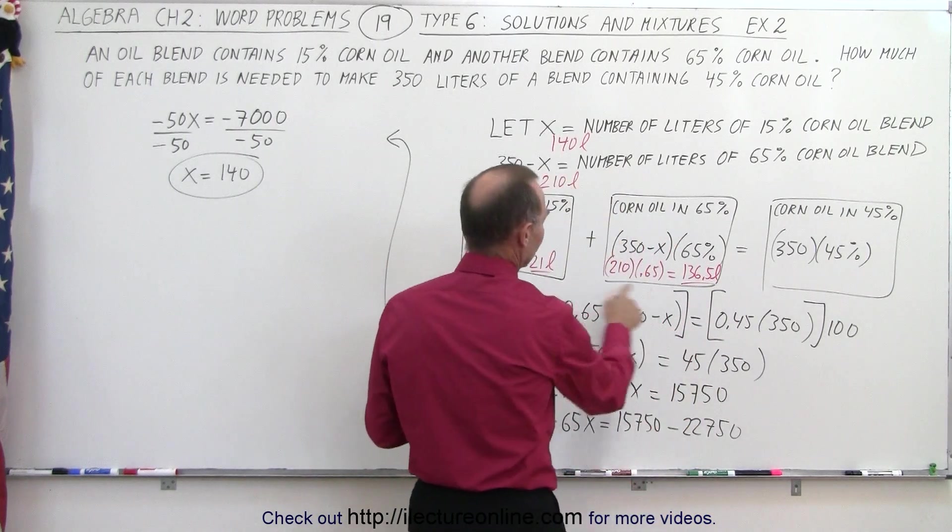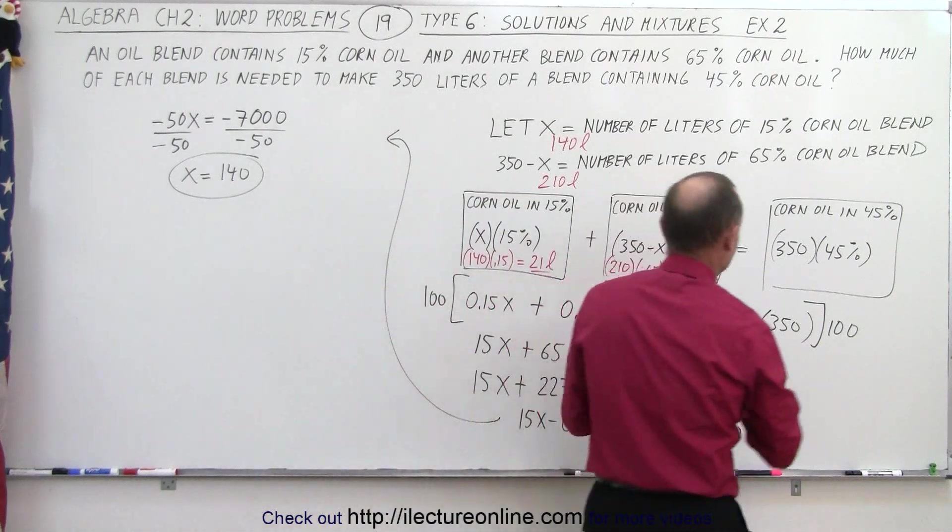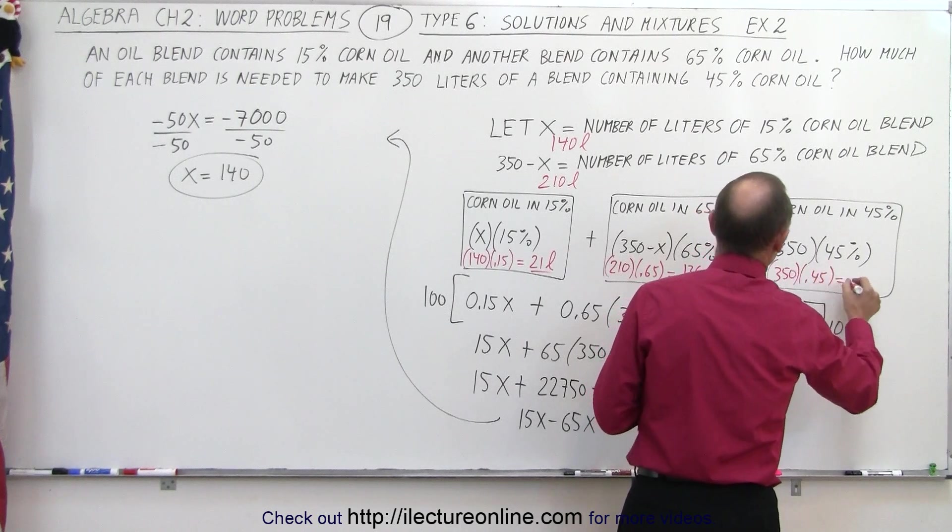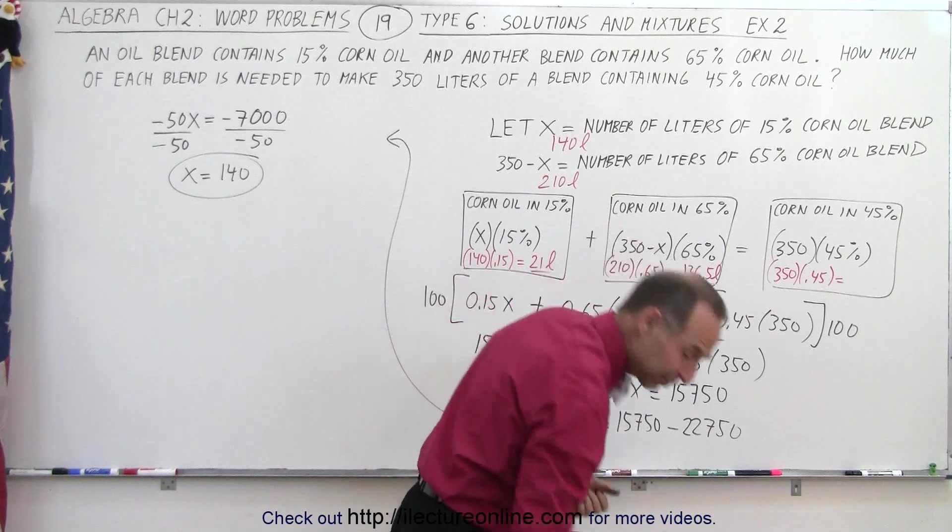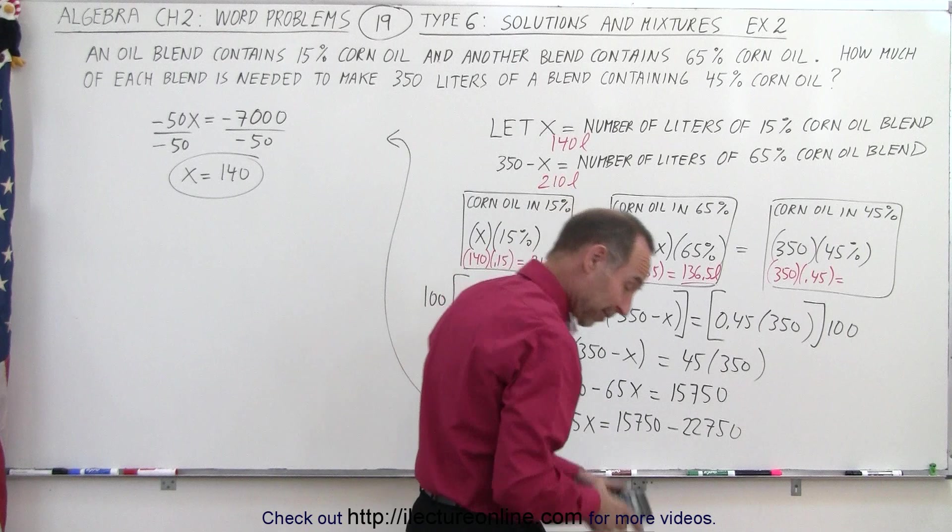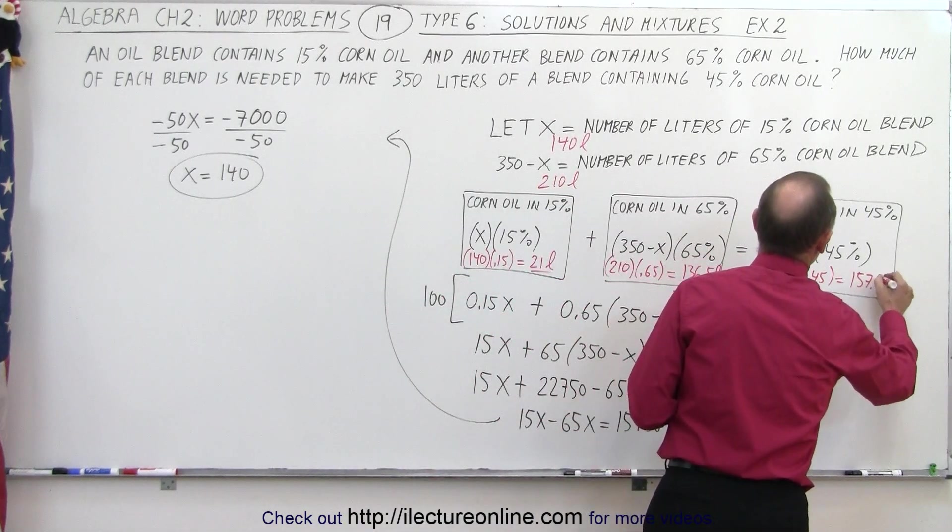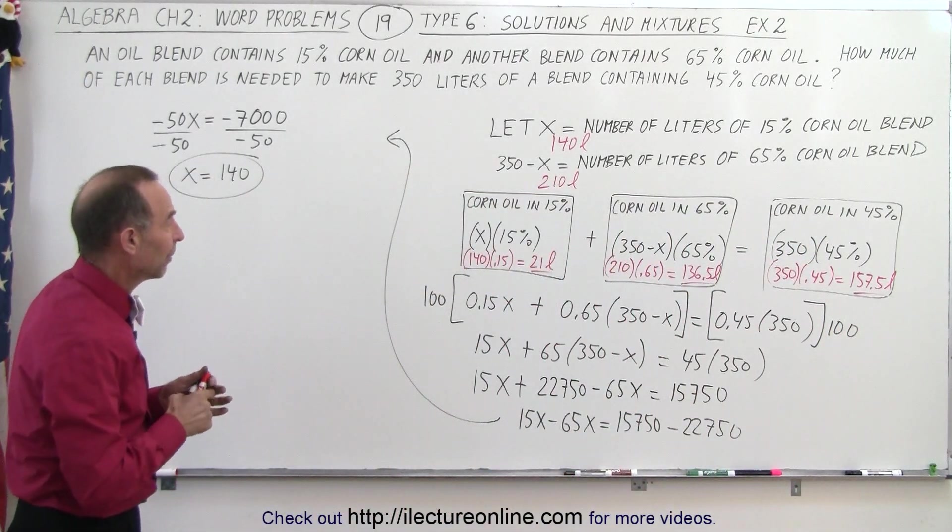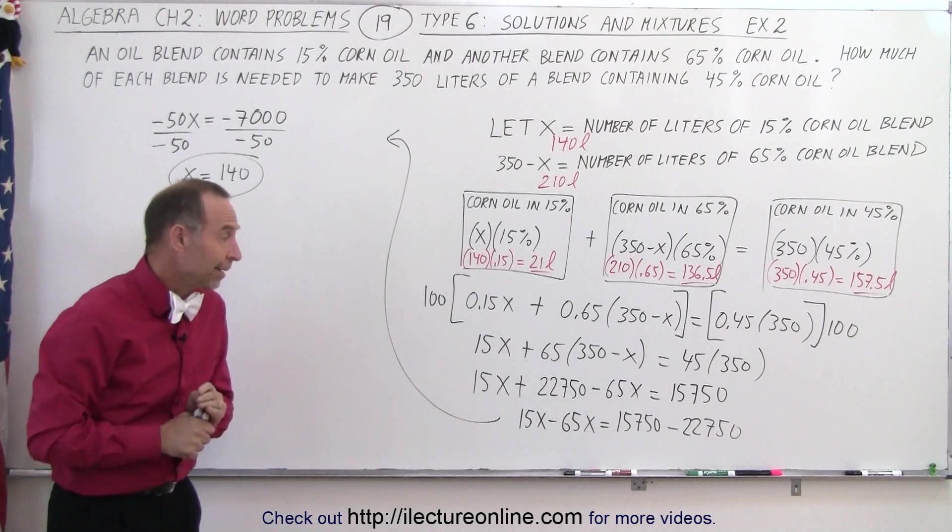And together, that forms 157.5. We should get the same in the final amount right here. So that's 350 multiplied times 0.45. We said 157.5. Let's see, that's correct. 350 times 0.45, 157.5, and so it looks like we have the correct numbers here. We have the correct amount of liters for the first blend and the second blend, and everything seems to check out.